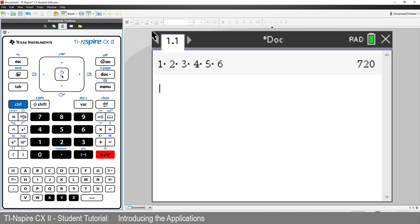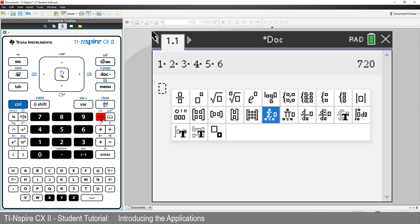There are other ways this could be calculated. Let's have a look in the math templates. The capital letter in the Greek alphabet, PI, corresponds to calculating the product of a set of numbers. Arrow across and press Enter.